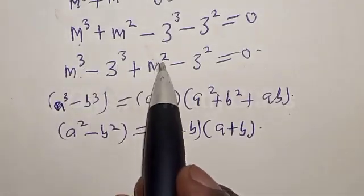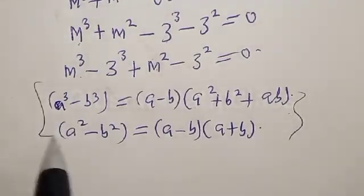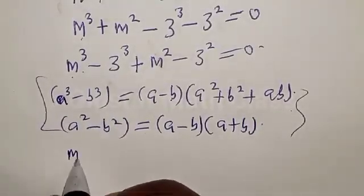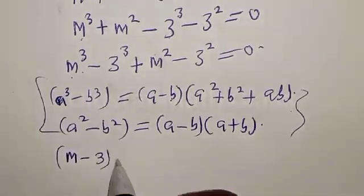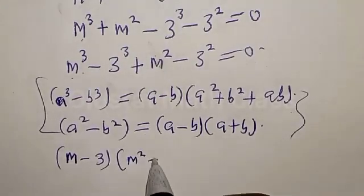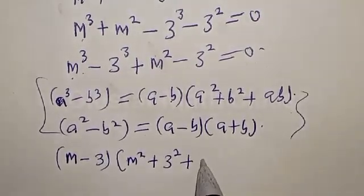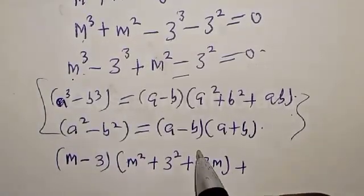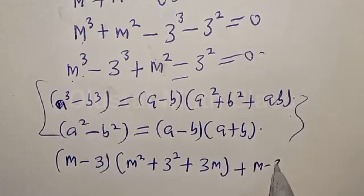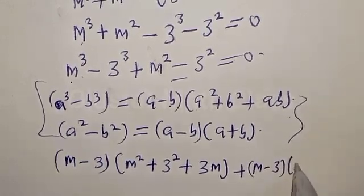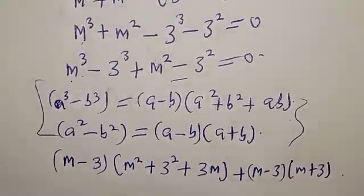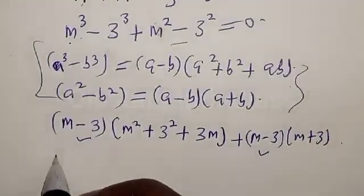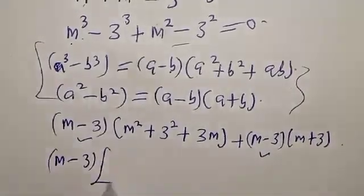Substituting for m cubed minus 3 cubed plus m squared minus 3 squared, in this case a is m and b is 3. So m cubed minus 3 cubed gives m minus 3 times m squared plus 3 squared plus 3m, and m squared minus 3 squared gives m minus 3 times m plus 3. The factor m minus 3 is common in both terms.